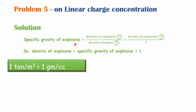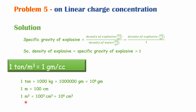One more important unit conversion: 1 ton per meter cube is equal to 1 gram per cc. Since 1 ton = 1000 kg = 10⁶ grams, and 1 meter = 100 cm so 1 m³ = 10⁶ cm³, we get 1 ton/m³ = 10⁶ g / 10⁶ cm³ = 1 g/cm³. Always remember this equivalence.